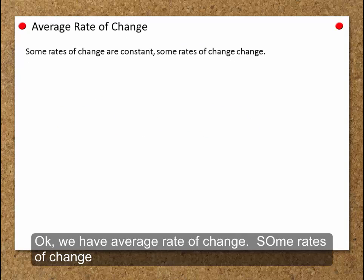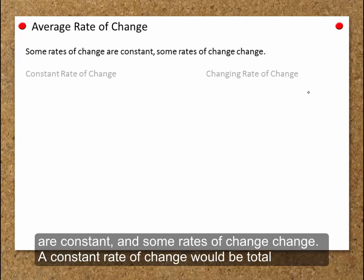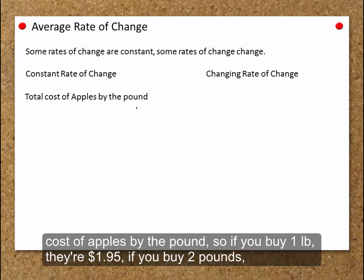We have average rate of change. Some rates of change are constant, and some rates of change change. A constant rate of change would be total cost of apples by the pound.